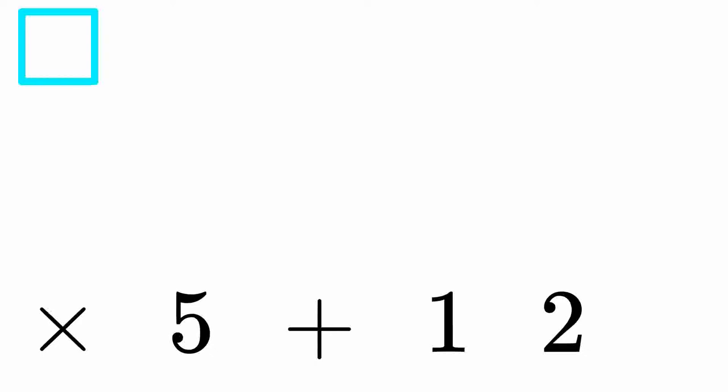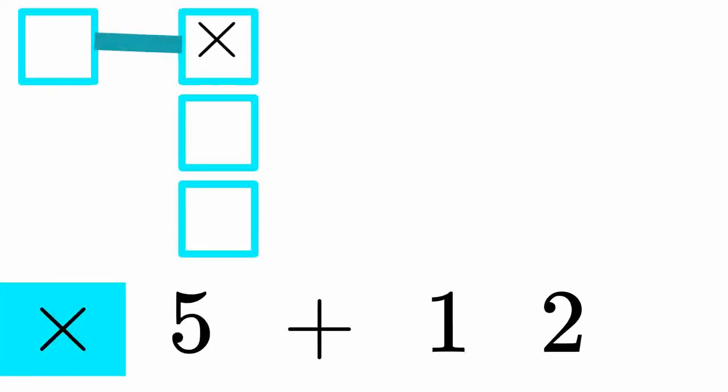For this expression, we start with multiplication. Since multiplication isn't a number, we can't put that in the box. Instead, we will need to multiply two other expressions to get our final answer. The first of those expressions is just the number 5.